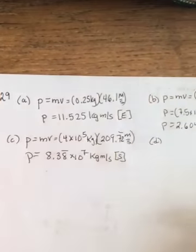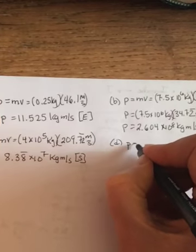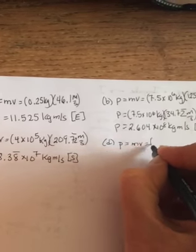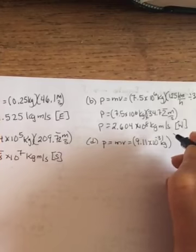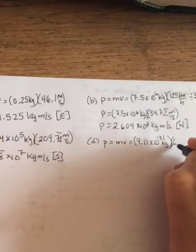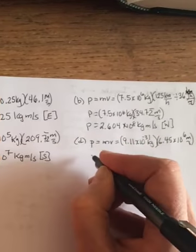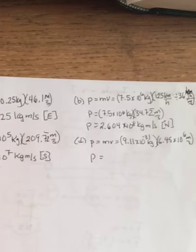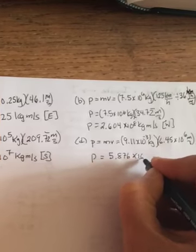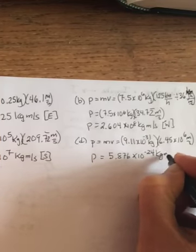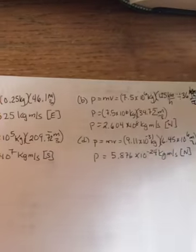And Part D says an electron mass 9.11 traveling north and no conversion necessary this time. So 9.11 times 10 to the negative 31 kilograms. And the electron is going 6.45 times 10 to the sixth meters per second. And so when you do the math, you get 5.876 times 10 to the negative 24 kilogram meters per second. And the electron was going north, so its momentum is north.